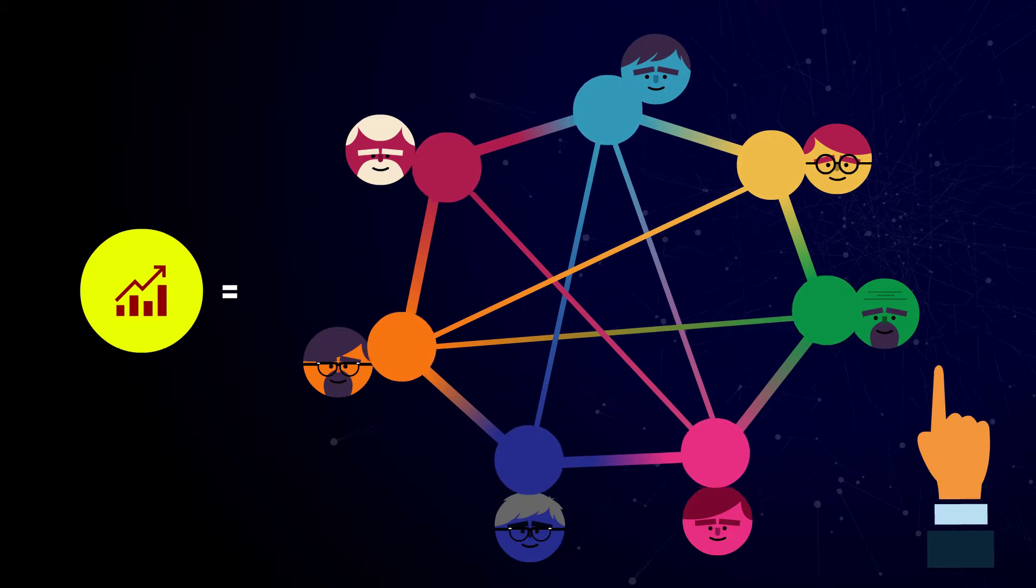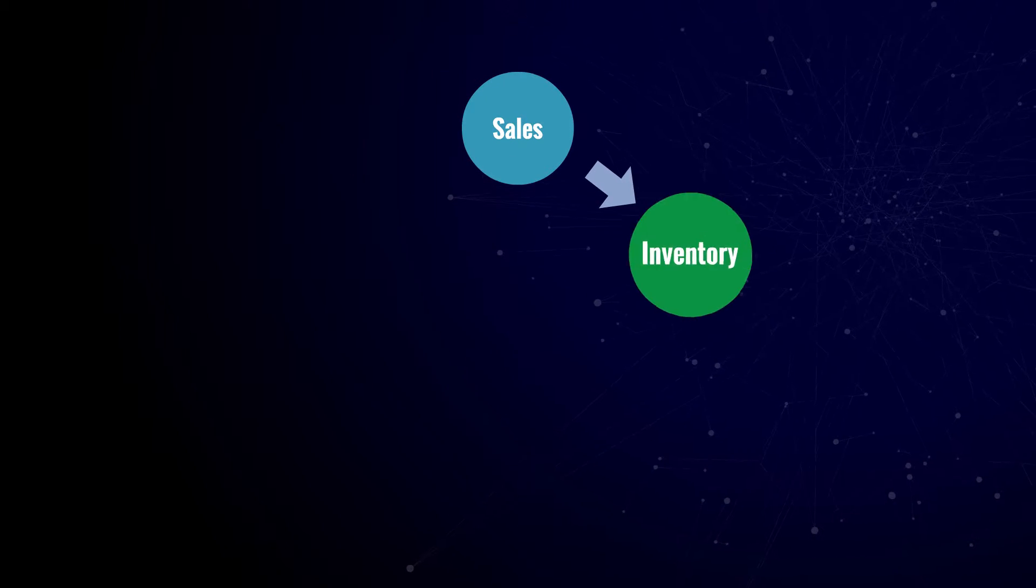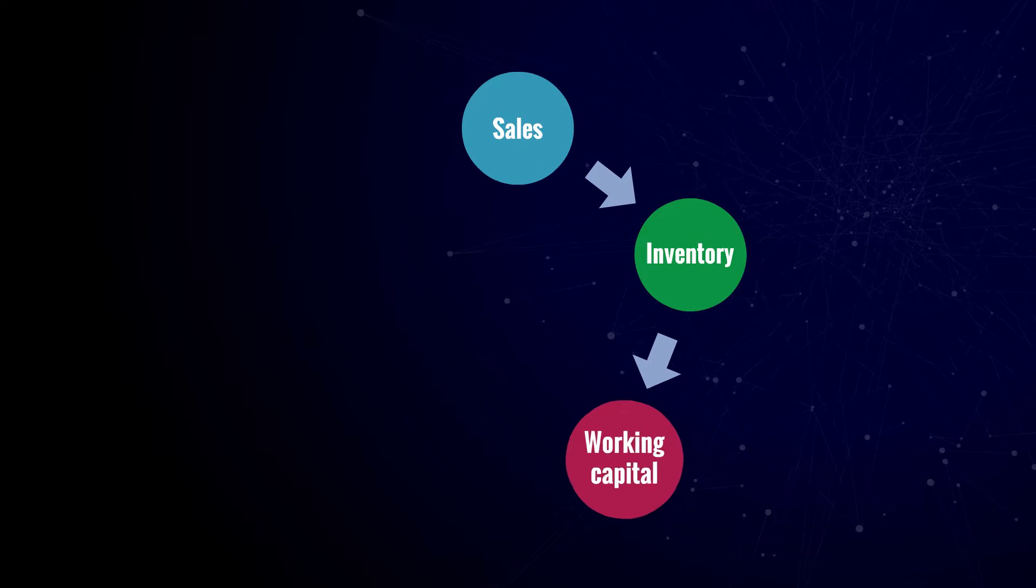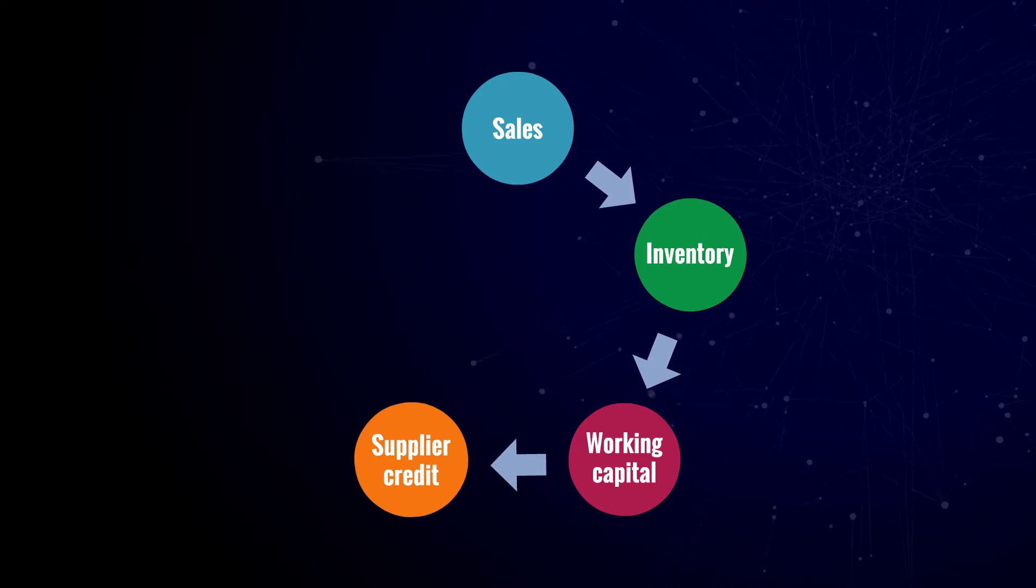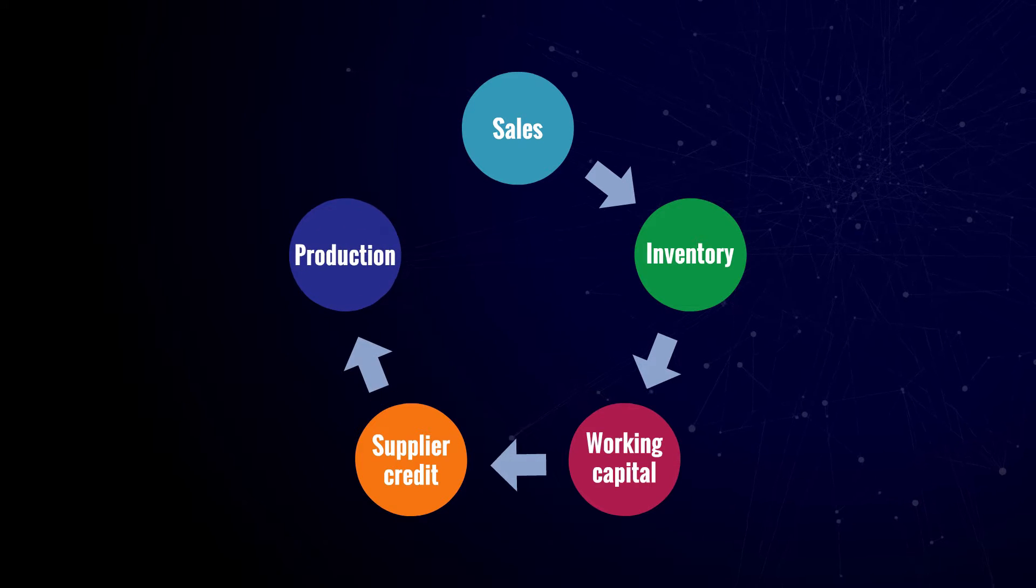For example, the decision to increase sales can lead to growing inventory levels, thus increasing working capital levels, which can force one to increase supplier credits causing material delays and hence production delays, which can then finally impact sales negatively.